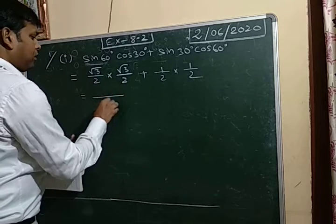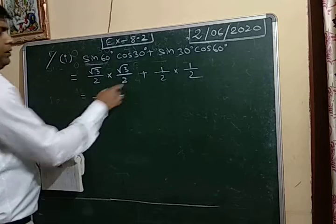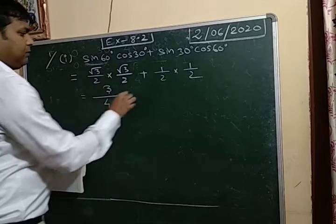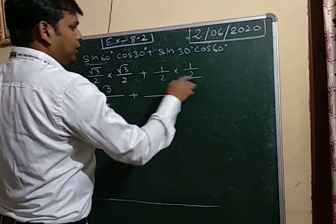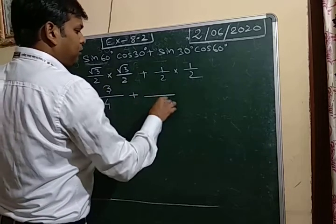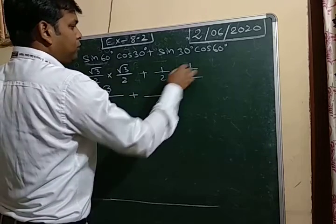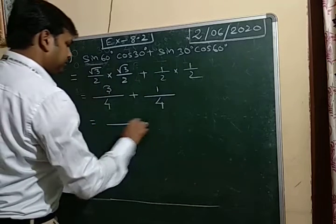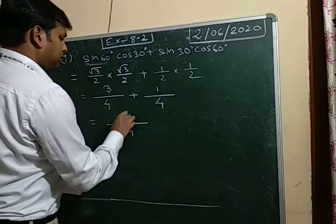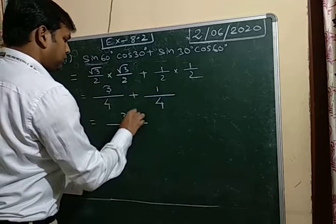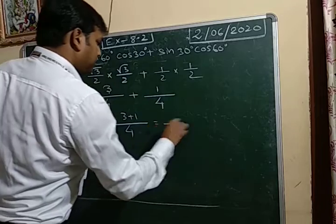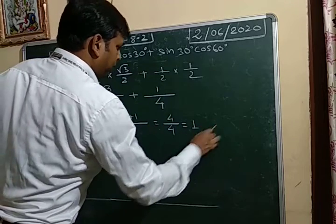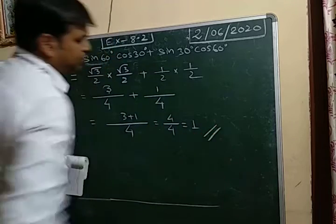Now simplify: denominator times denominator, so 2 times 2 is 4. Root 3 into root 3 is 3. Plus 1 into 1 is 1, and denominator is 4. So it is 3/4 plus 1/4. Taking 4 as the LCM: 3 plus 1 over 4 is 4 by 4. So the answer is 1. This is the first one — a very easy sum.